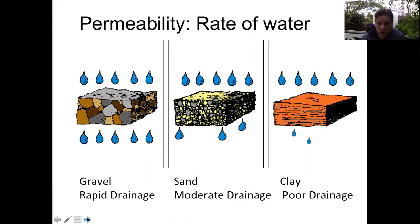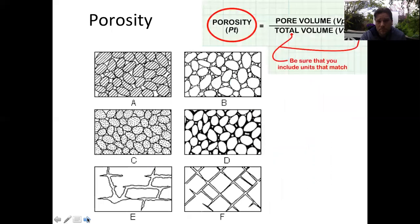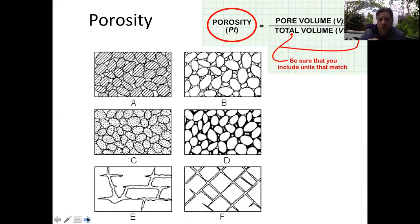Permeability is a key factor a geologist considers when deciding where to drill for groundwater. Porosity describes how much water can actually be stored in the ground — it's the ratio of void space volume to total volume, expressed as a percentage. Some locations with well-rounded sands have porosity close to 48%, meaning a tremendous amount of water is locked beneath the surface. This is a valuable resource, and unfortunately we often over-pump it — something that will become increasingly contentious as countries compete for water.